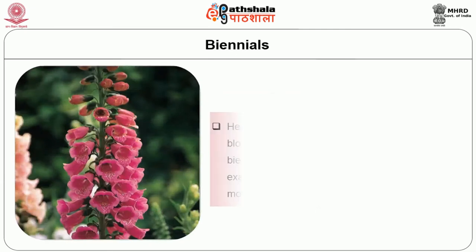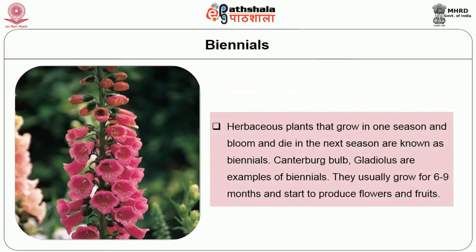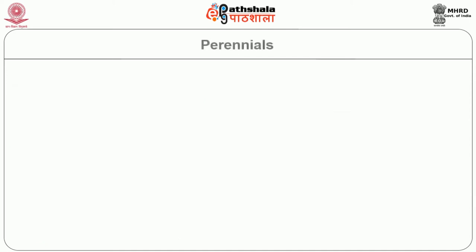Herbaceous plants that grow in one season and bloom and die in the next season are known as biennials. Canterbury bell and gladiolus are examples of biennials. These are grown for six to nine months and then start to produce flowers and fruits.